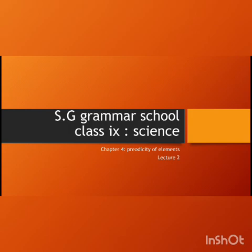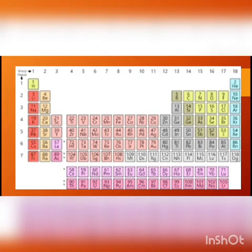Here you can see the modern periodic table. Under the modern periodic table, we have seven periods. The horizontal rows are called periods, and the vertical rows are called groups. As you can see, the horizontal rows are seven: one, two, three, four, five, six, seven — as mentioned here.